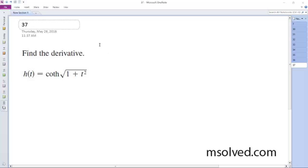All right, the derivative of this is going to be h prime of t is going to be equal to cotangent h of the square root of 1 plus t squared is equal to negative cosecant squared,